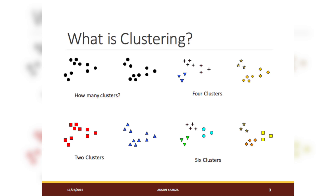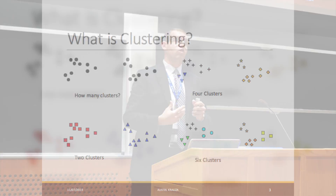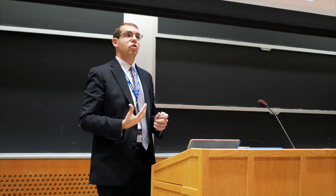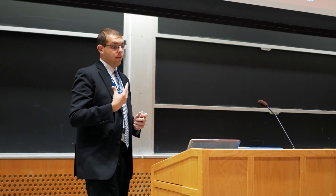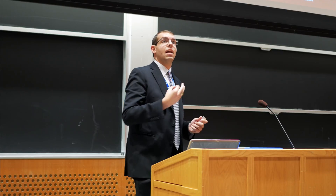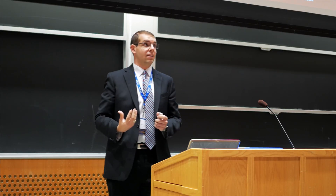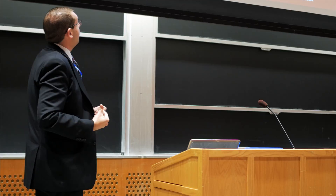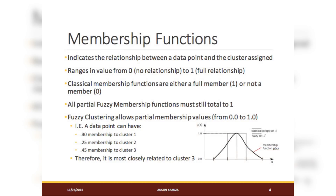Membership functions indicate the relationship between a data point and a data cluster. They range in value from zero — no relationship — to one — a full relationship. With traditional truth values, you either have a solid one or a solid zero: either it is, or it isn't. With the introduction of fuzzy logic, we can now have partial truth values. For example, a data point can have 30% membership to cluster one, 25% to cluster two, and 45% to cluster three. Since it has the highest value to cluster three, it'll most likely be associated with cluster three.